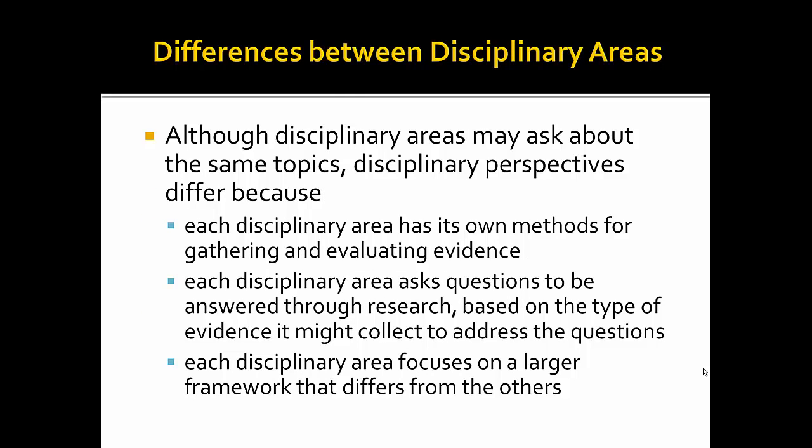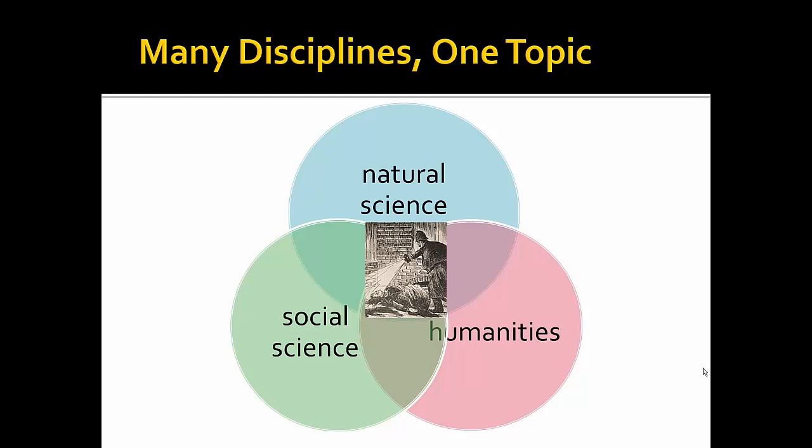What are the differences between disciplinary areas? Although they may research the same topics, perspectives change across disciplines because each area defines useful evidence differently and has different methods for collecting and evaluating evidence. Each asks questions based on the type of evidence it might collect, places the evidence into a different framework for analysis, and the ways researchers interpret the evidence changes across disciplinary areas. We will see both similarities and differences as we discuss our example topic: murder. As a topic, murder — the concept and the reality — allows us to explore the three disciplinary areas to understand similarities and differences in perspective, research questions, and research methods.